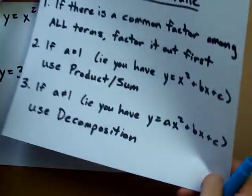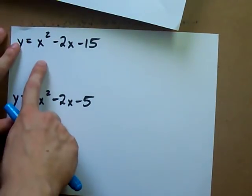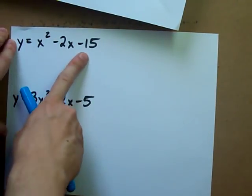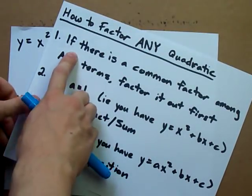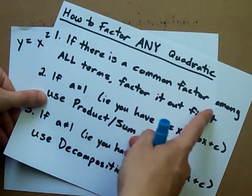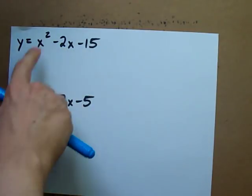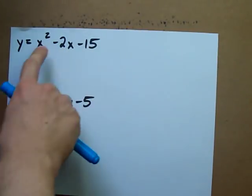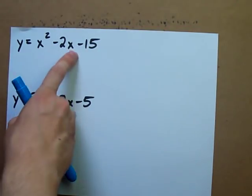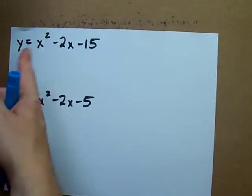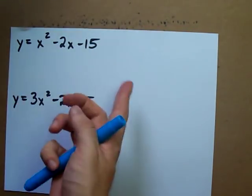The first one that I want to do it for is x squared minus 2x minus 15. Is there a common factor among all the terms? No, x squared minus 2x minus 15. This one's missing an x. There's no 2 or anything here, so there's nothing we can pull out of all of those. There's nothing common to all of them.